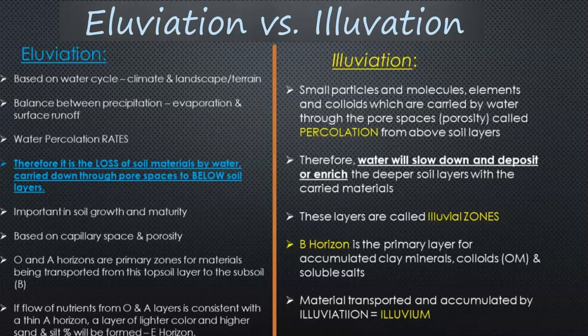That then creates illuviation, which is the enrichment, storage, or depositing of the carried materials by the water at a certain depth — whereby the water can't go any further, the capillary spaces are too small, or the bulk density is too high — and the small particles are deposited and enriched in a certain layer called the B horizon. The B horizon is the accumulation of material transported and leached down by the water, and these areas are called illuvial zones. The accumulation of this material is called illuvium.